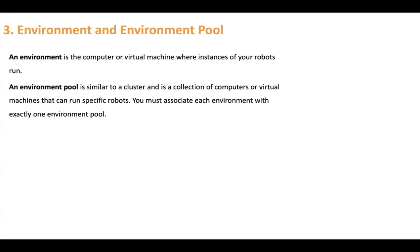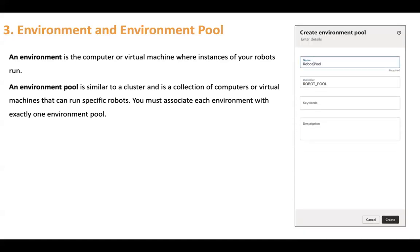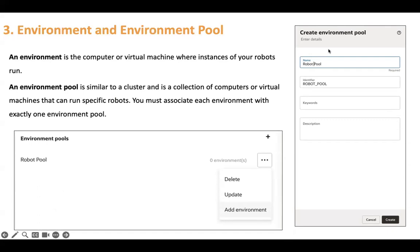For example, if you want to run two robots in a single minute and one robot takes one minute — running sequentially would take two minutes, but running in parallel requires two instances or two virtual machines. You add both environments into one environment pool. So you create an environment pool, say 'robot pool', and after the pool is added you add the environments representing the machines where you have run the agent.